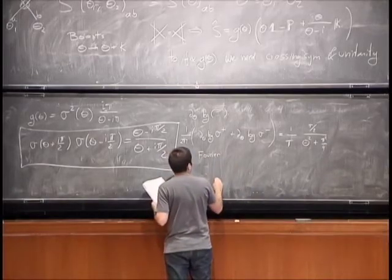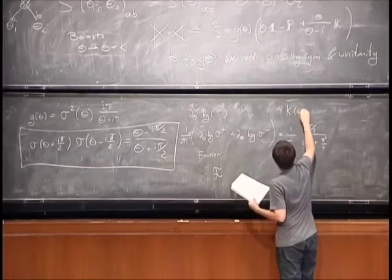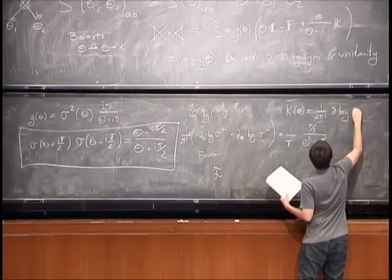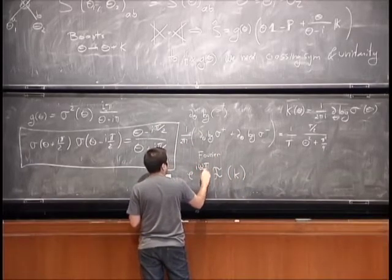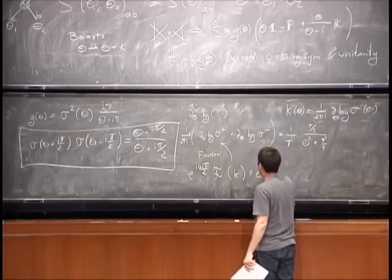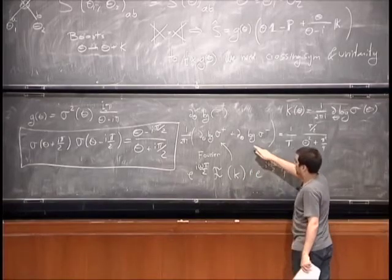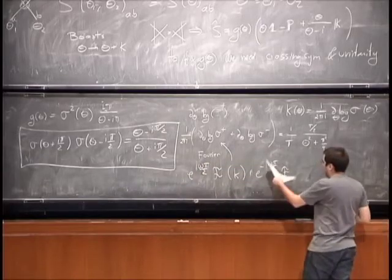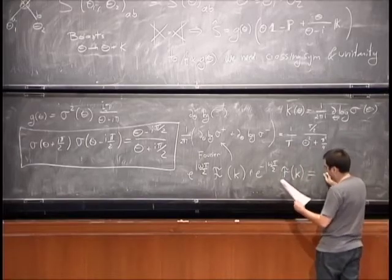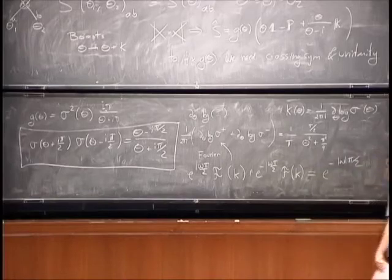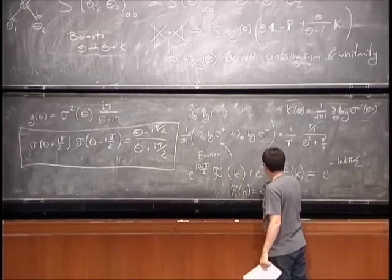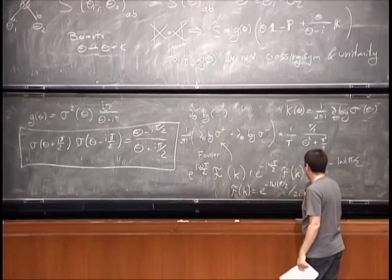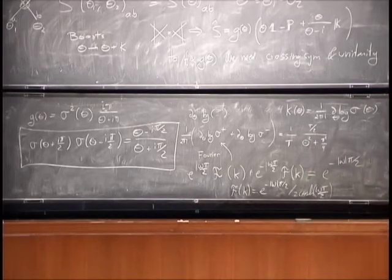Going to Fourier space: the Fourier transform of a function of θ plus something is just an exponential times the Fourier transform of the function. So the Fourier transform of K times e^{ωπ/2} plus e^{−ωπ/2} equals the Fourier transform of a Lorentzian, which is e^{−|ω|π/2}. Therefore, the Fourier transform of K is e^{−|ω|π/2} / (2·cosh(ωπ/2)). I compute the inverse Fourier transform and integrate.